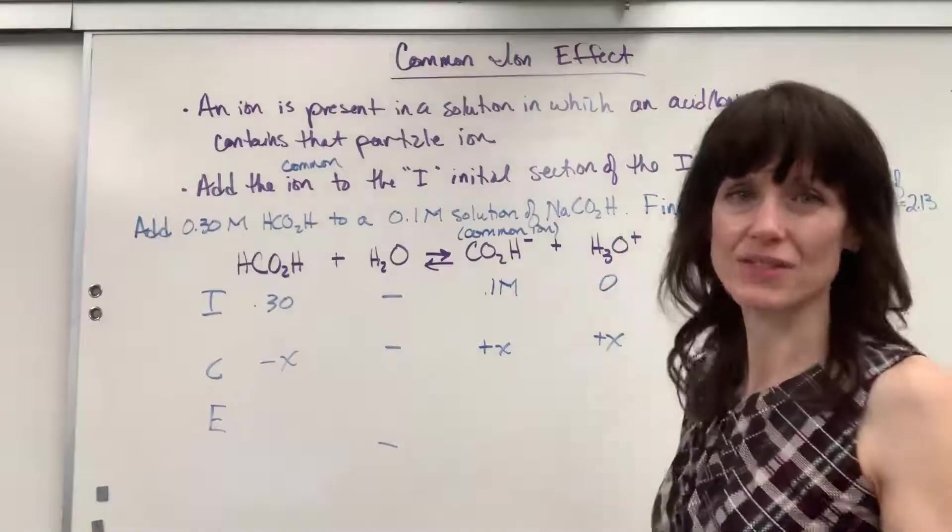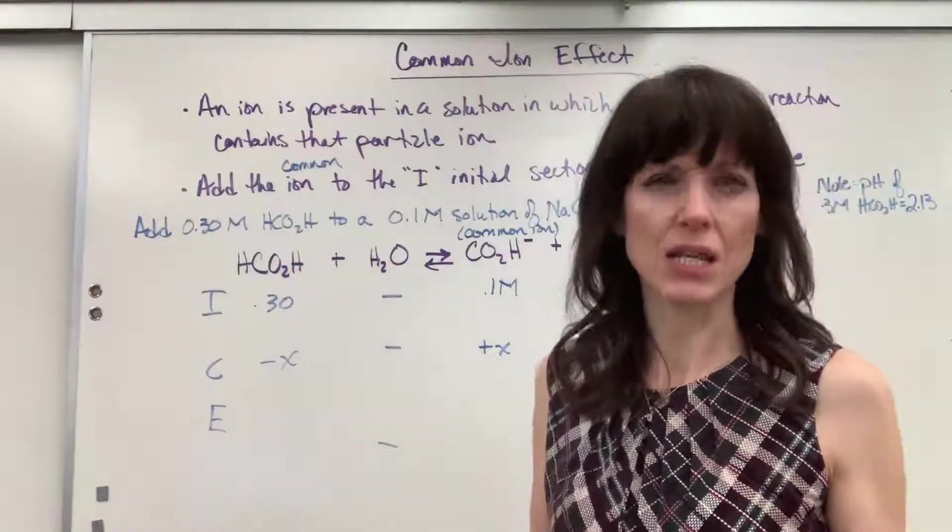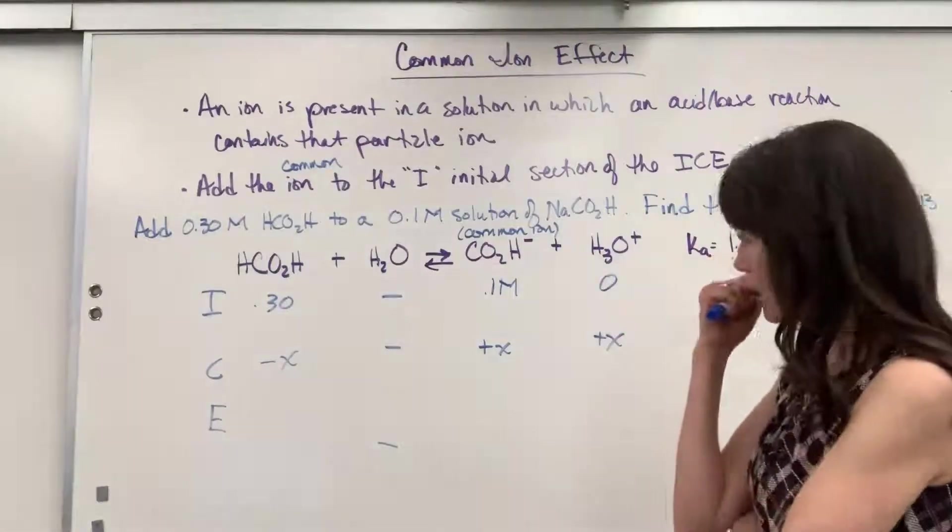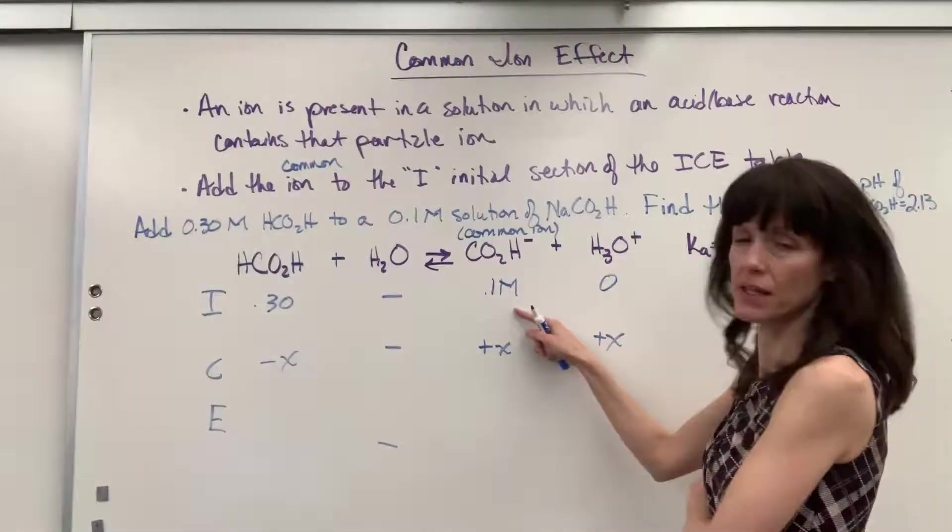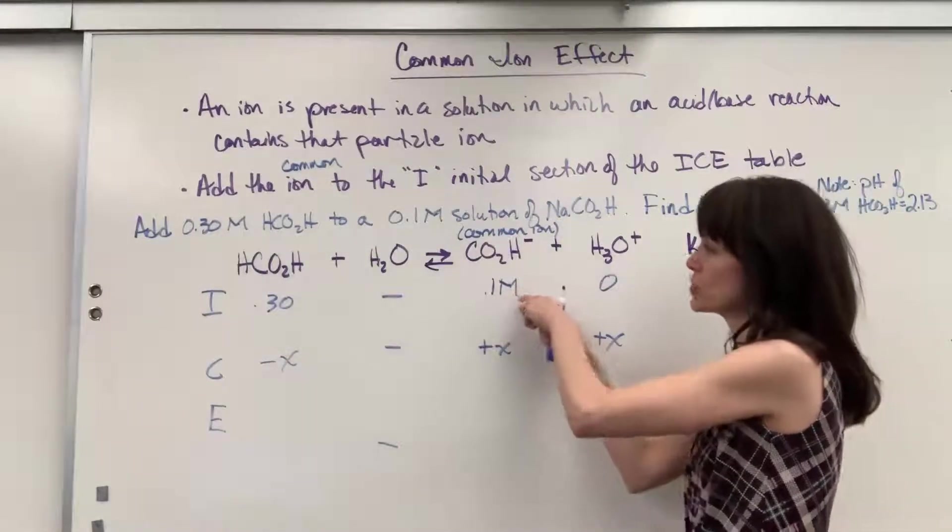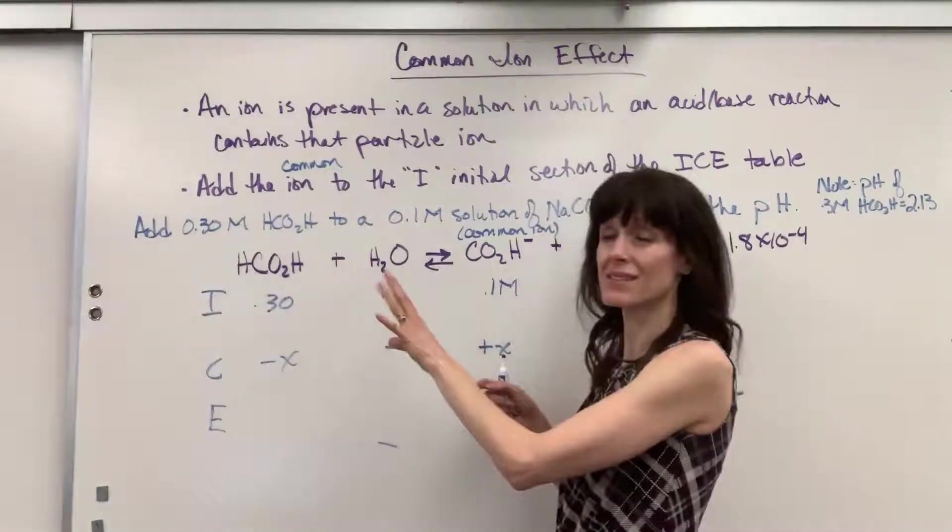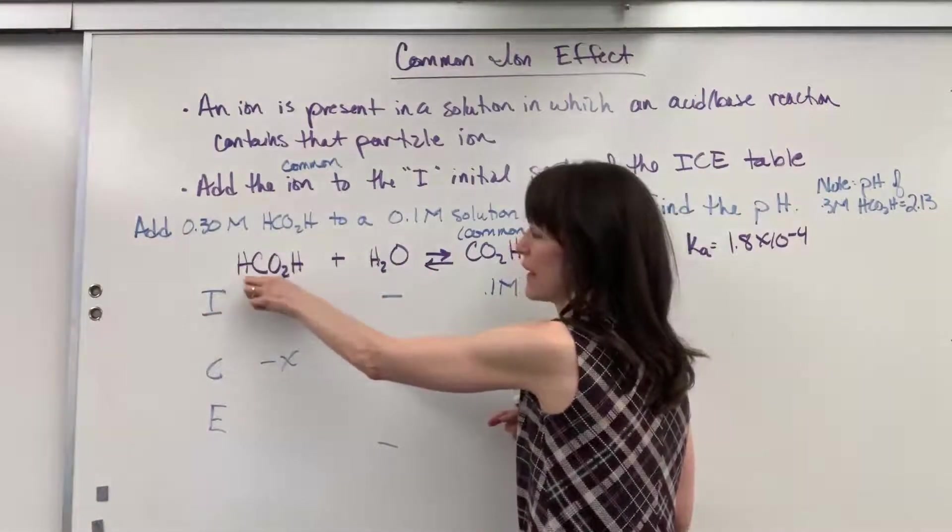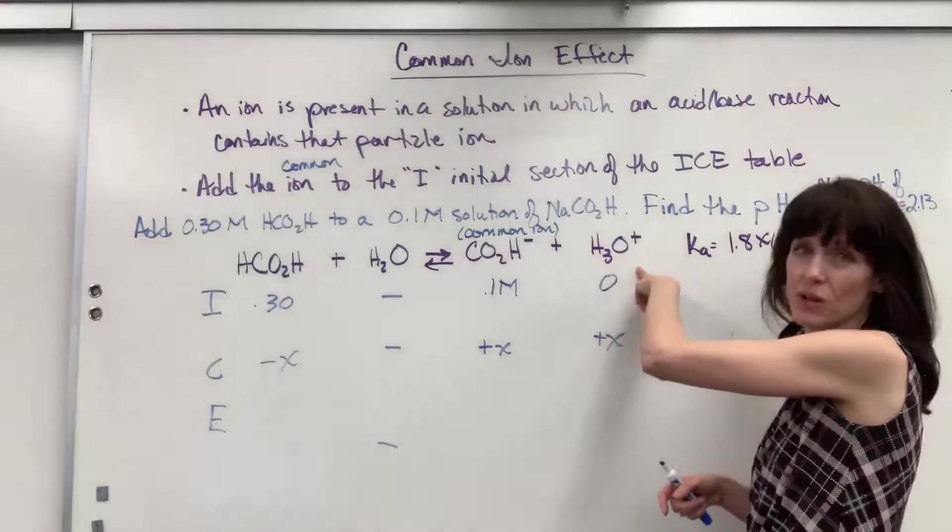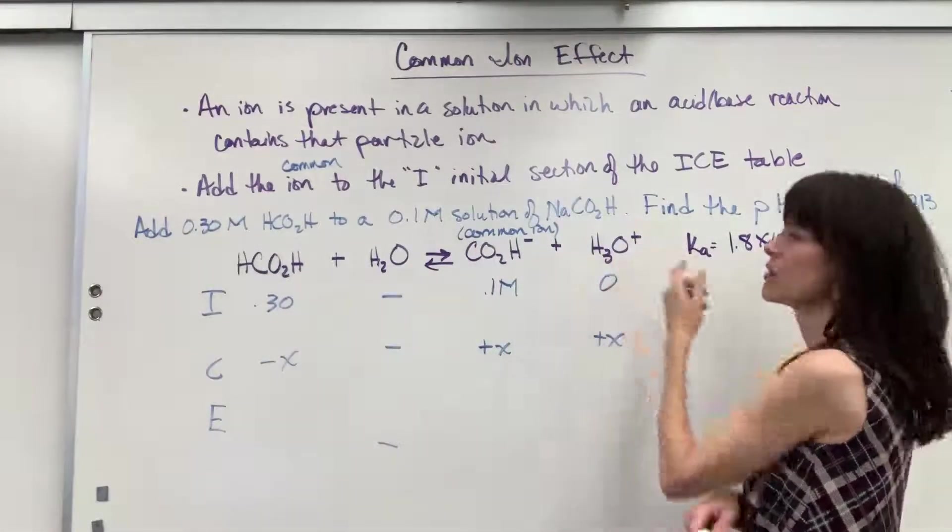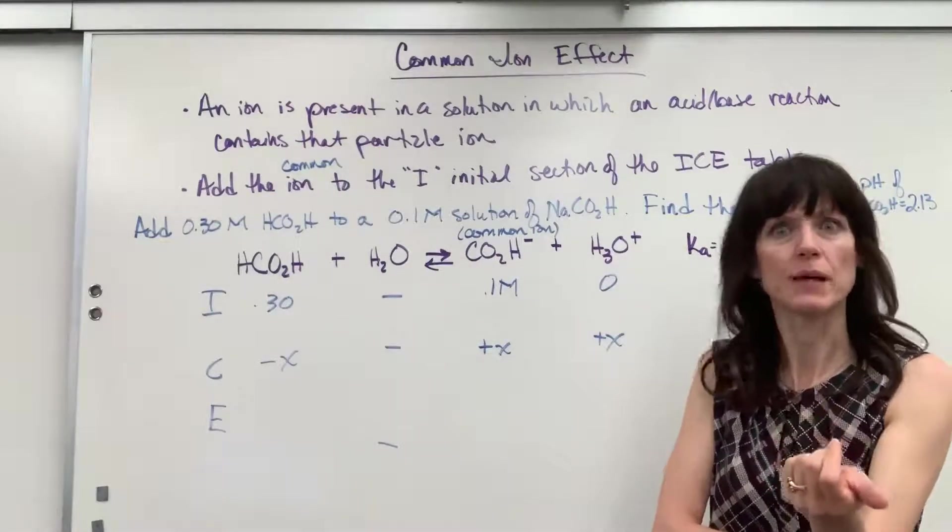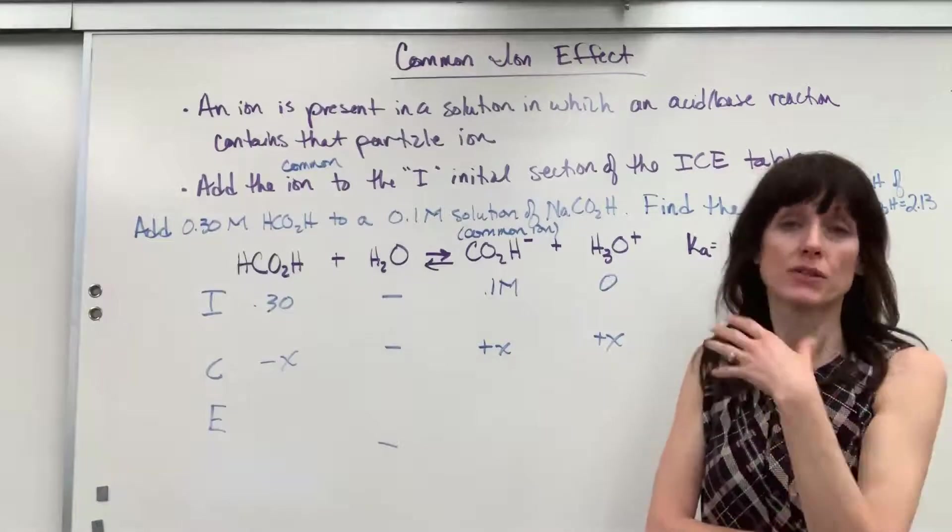This is a common multiple choice question that a teacher can ask you. You could be given this and actually not have to do calculations and just predict what will happen to the pH. So here's how you think it out. I have something here that's unusual. I have a common ion. Because I have this concentration, it will shift the equilibrium toward the left, which means I'll have more of that HCO2H, less of the H3O+. So if I have less hydronium, what happens to the pH? It becomes more basic. It goes up.